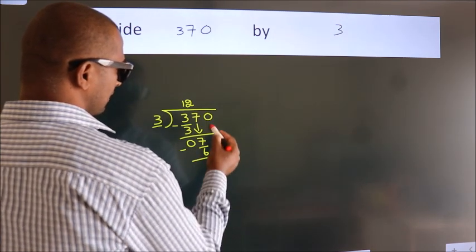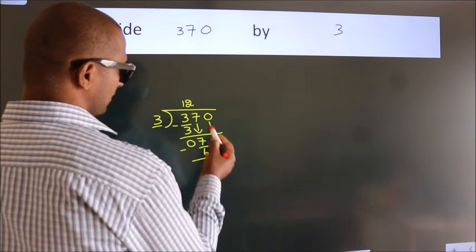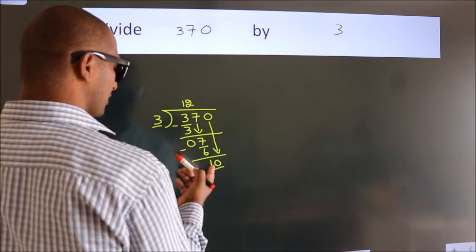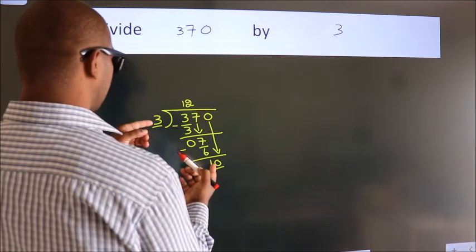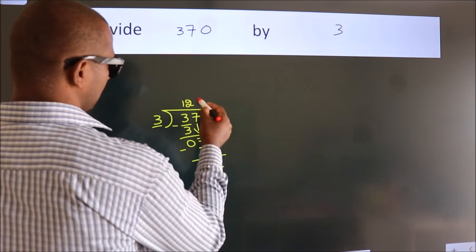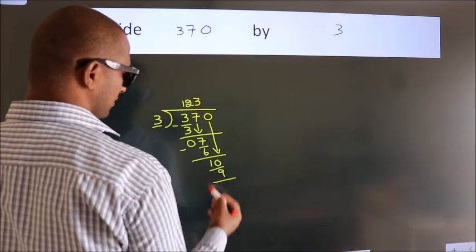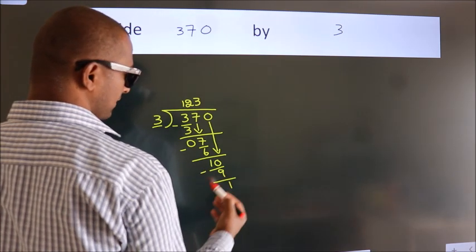After this, bring down the beside number. So, 0 down. So, 10. A number close to 10 in 3 table is 3 3s, 9. Now, we subtract. We get 1.